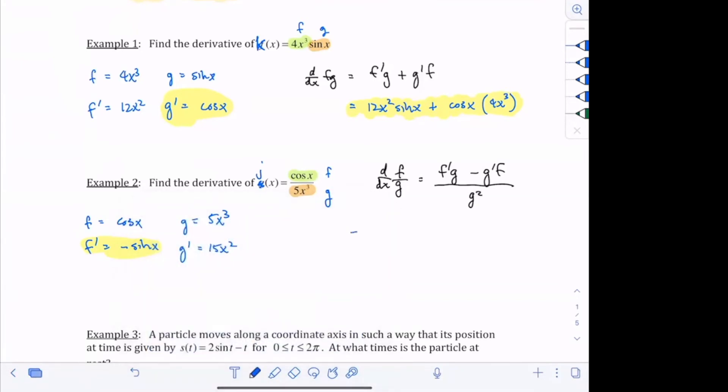So this is going to be equal to negative sine of x times 5x cubed minus 15x squared times cosine of x all divided by 5x cubed squared. Is there any questions about this answer?